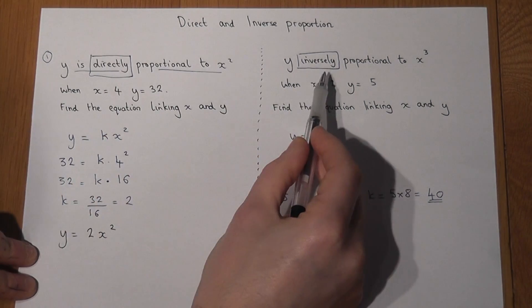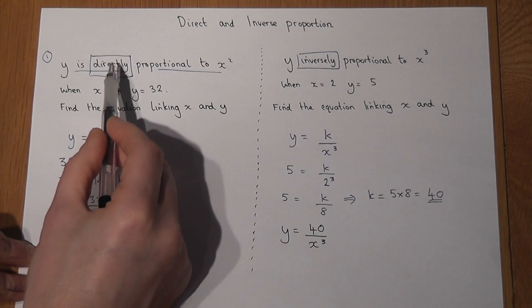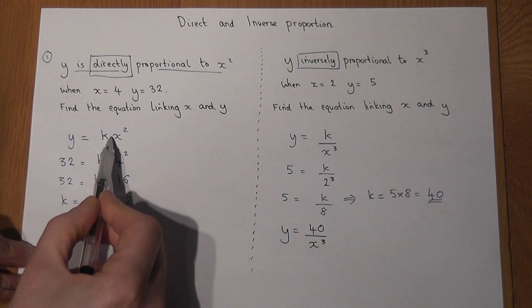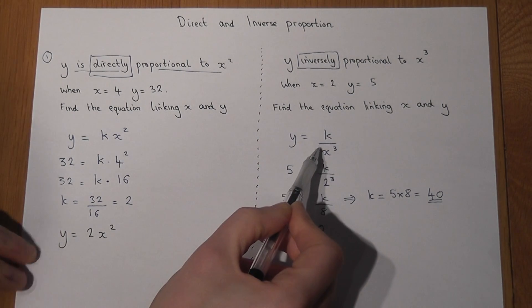And these are the two main ones to know: direct where we times, inverse where we divide.